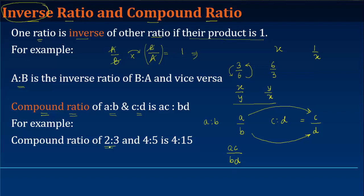For example, if you have 2 is to 3 and 4 is to 5 as two ratios, the compound ratio for these two can be obtained by multiplying 2 with 4, which gives you 8, and multiplying 3 into 5, which gives you 15.